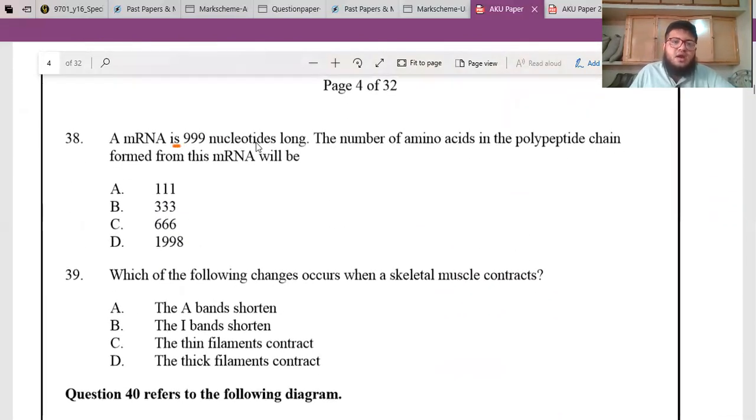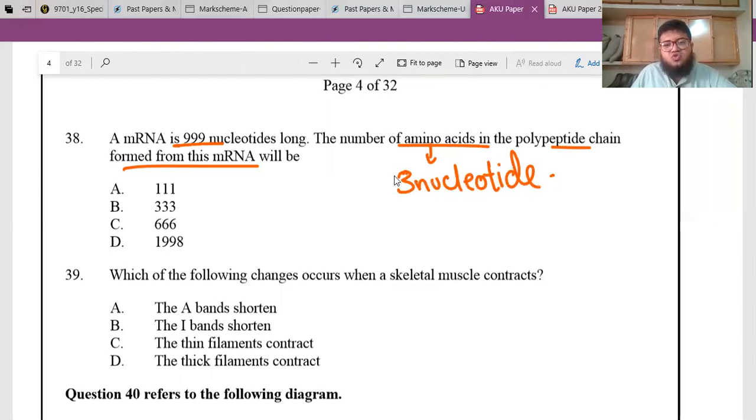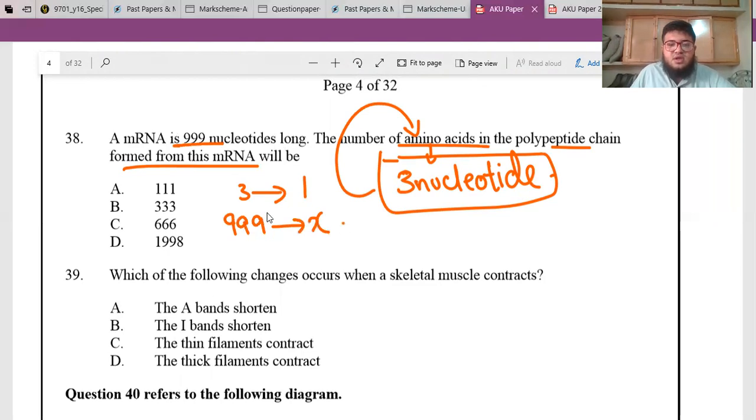mRNA contains 999 nucleotides. The number of amino acids in the polypeptide chain formed from this mRNA will be - each amino acid is coded by 3 nucleotides, a triplet codon. If 3 nucleotides code 1 amino acid, 999 divided by 3 equals 333. The answer is option B.